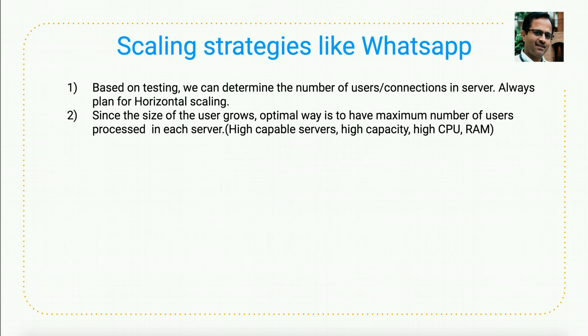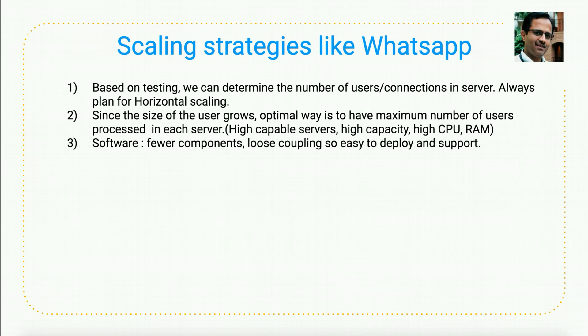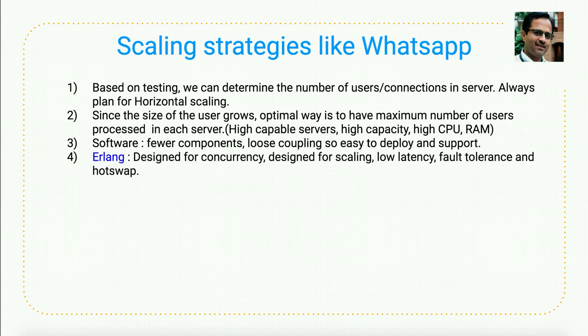Third, software should be built in a loosely coupled way so that if something goes down, replacement and fixing is easy. Fourth, Erlang is the software I would use for chat applications — it is designed for concurrency, scaling, low latency, and fault tolerance. It also has hot swap, which is the most important feature: during runtime you can change and deploy your application without any impact to users.